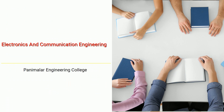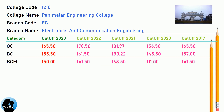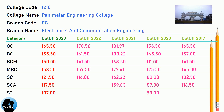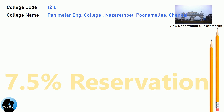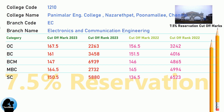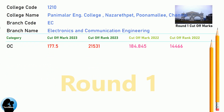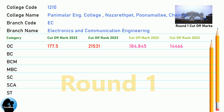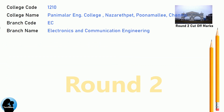DNA Cut-off for Panimalar Engineering College in Computer Science and Engineering. DNA 7.5 Reservation Cut-off for Panimalar Engineering College in Electronics and Communication Engineering, with reservation categories including 8.6, 9.4, 10.6, 9.5, and 9.8. DNA Round 1 Cut-off for Panimalar Engineering College in Electronics and Communication Engineering.